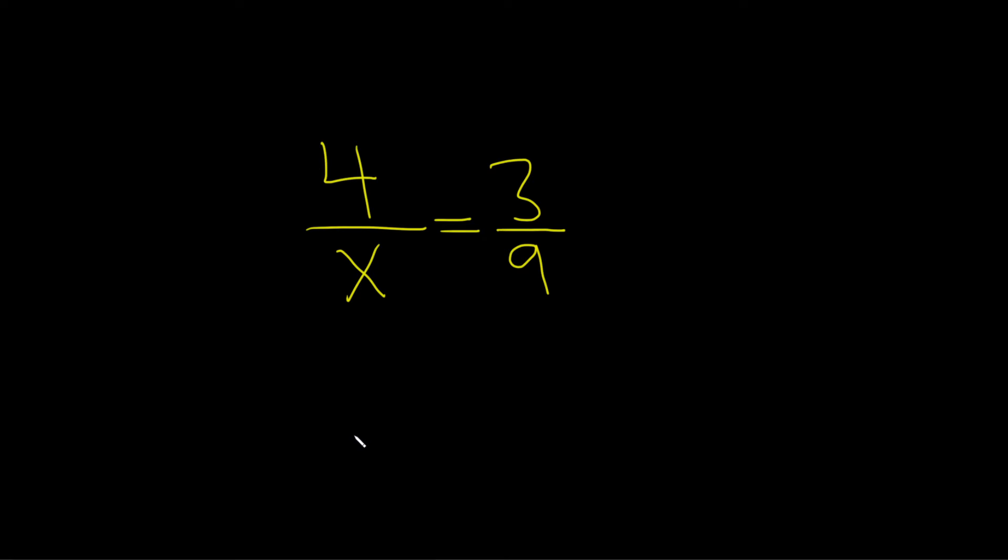In this problem, we have to solve a proportion. So we have 4 over x equals 3 over 9.